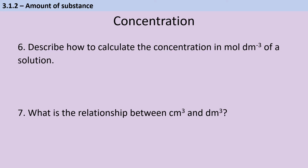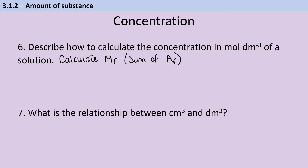If I know the mass of a solute dissolved in a solution, in order to work out the concentration, the first thing I need to do is to work out the moles. To do that, I need the relative formula mass. So I firstly calculate the relative formula mass by adding together all of the relative atomic masses. Then I know that mass = MR × moles, so I can rearrange that formula to calculate the number of moles.